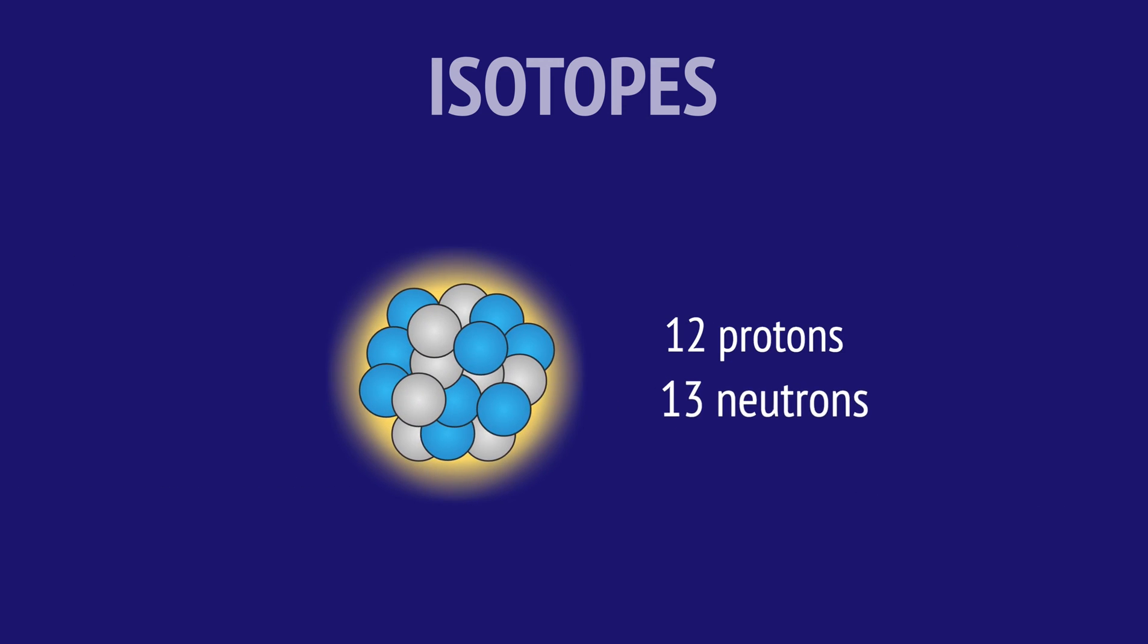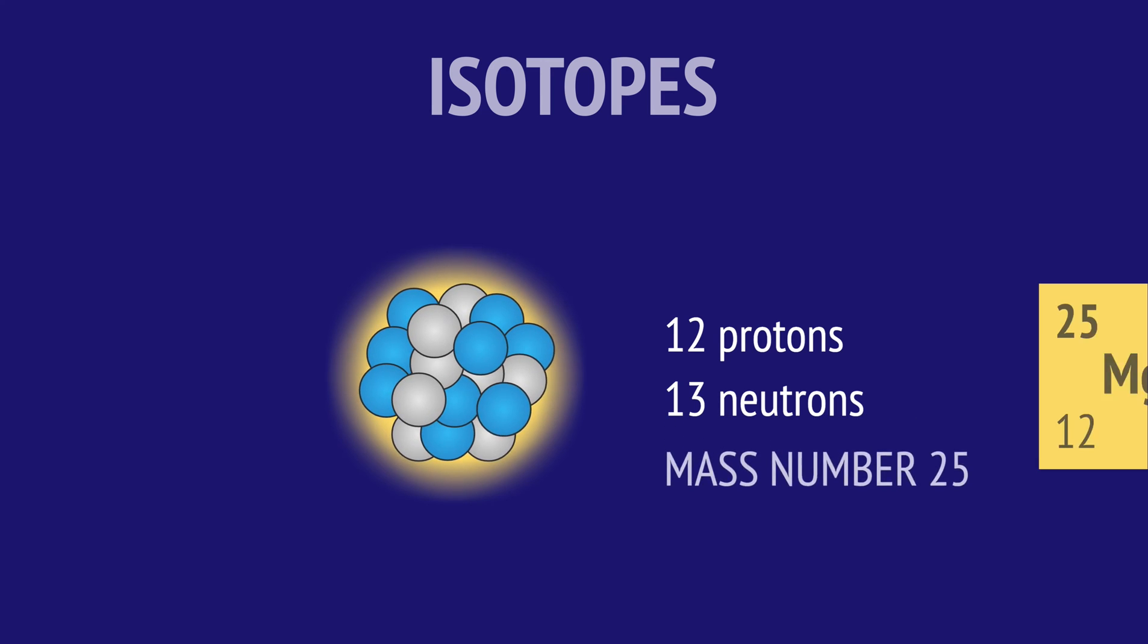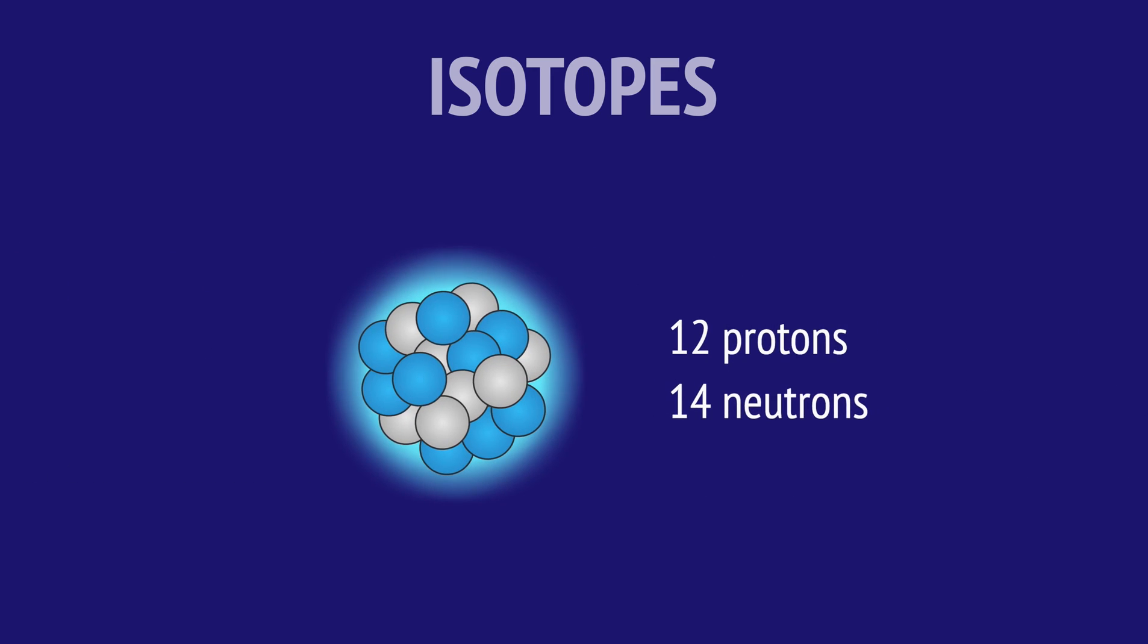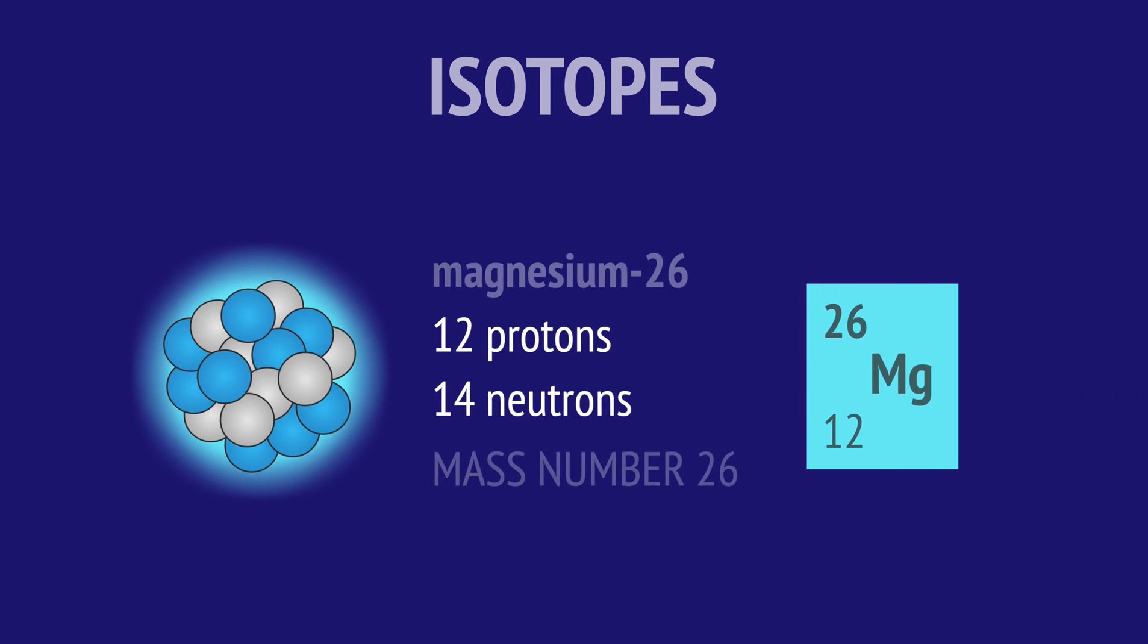Another isotope has 13 neutrons, and when we add the 12 protons, we get a mass number of 25. The other has 14 neutrons, which gives a mass number of 26.